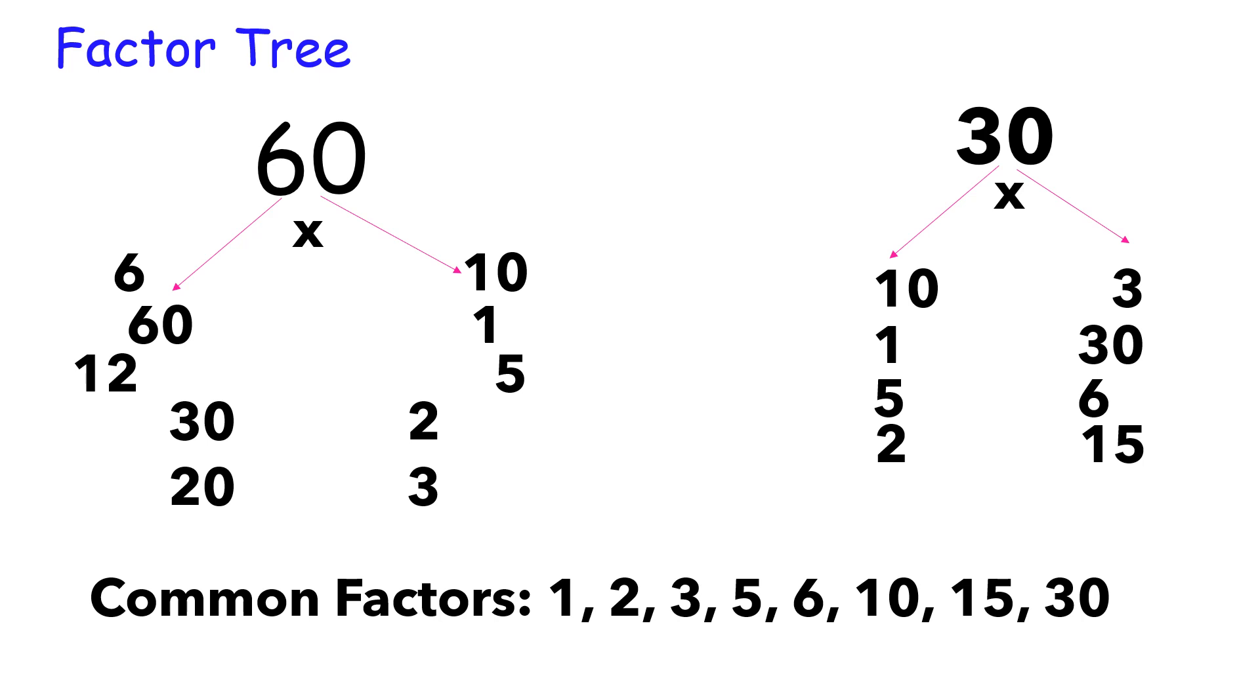Now, get the common factors. We have 1, 2, 3, 5, 6, 10, 15, and 30. Get the common factors of 60 and 30. And then, identify the GCF of 60 and 30. Which is the largest factor that both 30 and 60 have? So, the GCF of 60 and 30 is 30.